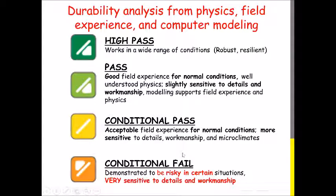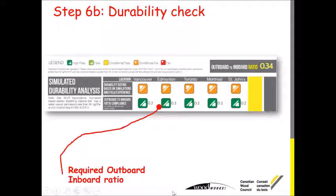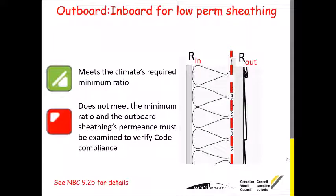The durability ratings are: high pass, pass, conditional pass, and conditional fail. The wall with the plastic poly on the inside has a conditional fail rating — it's risky in certain situations and very sensitive to details. You're really targeting a pass or high pass, where it's a good experience for normal conditions, or a high pass which is robust and resilient. Sal also talked about the outboard/inboard ratio — that's what the second row shows. It indicates the required outboard/inboard ratio for five regions, meaning you need enough insulation on the outside so condensation does not occur. This is applicable for lower-perm sheathings; if you have high-perm sheathing like mineral fiber, this clause can be ignored.